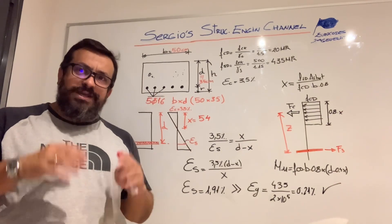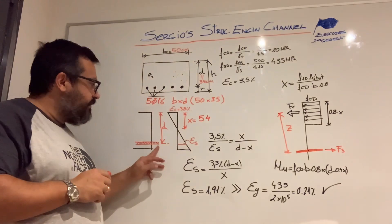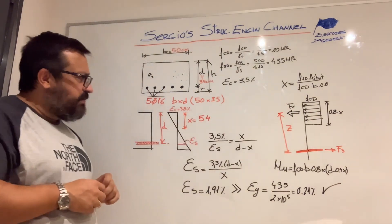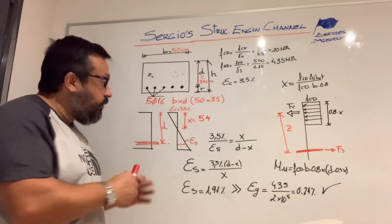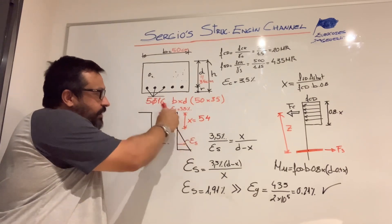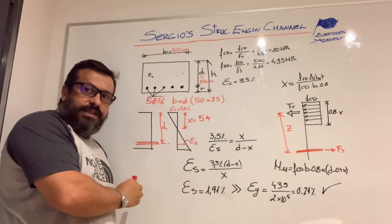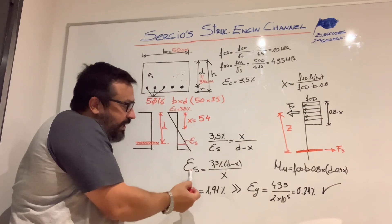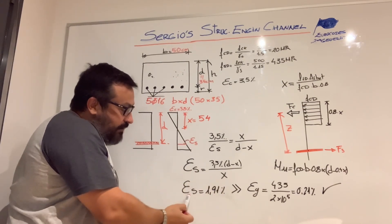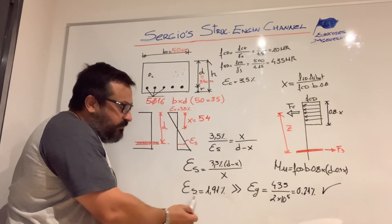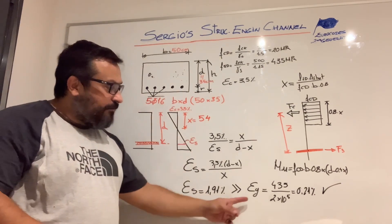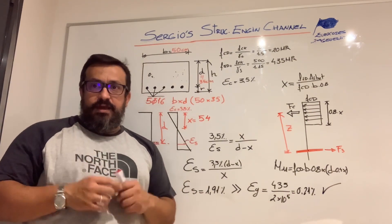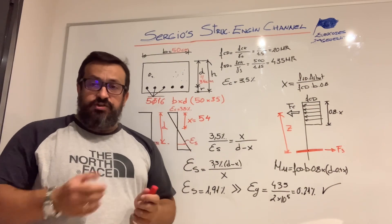Remember that at the beginning of the video we established the assumption of the plastified behavior of the steel reinforcement. That is the condition adopted in our calculation to get the ultimate bending moment. Using the strain plane deformation for the section and the equivalent triangle rule, we get the strain for the steel reinforcement equal to 1.91%. That is clearly bigger than the yield strain of the reinforcement, so the condition has been fulfilled, our assumption was correct, and we can confirm the ultimate bending moment for the section.